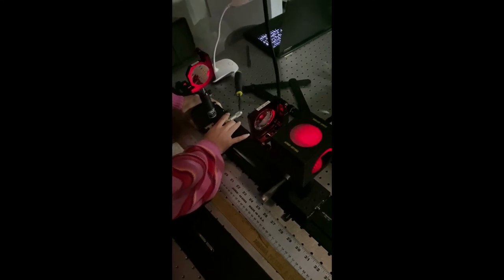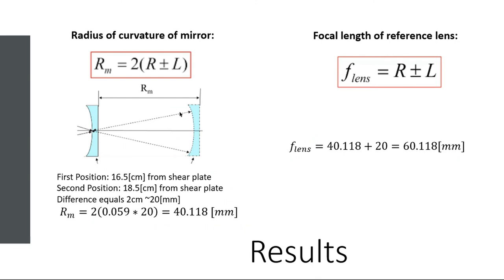Notice the fringes have an S shape to them, meaning that we're experiencing spherical aberrations. As a result we were able to find the radius of curvature of the mirror by taking the difference of those two position measurements and we also found the focal length.